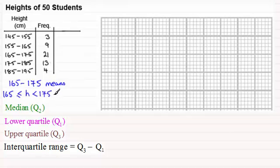So we've got for instance in this first interval here three students that have a height greater than or equal to 145 centimeters but less than 155 centimeters. And similarly here we've got nine students with a height that is greater than or equal to 155 centimeters and so on.